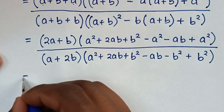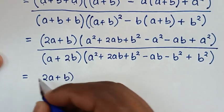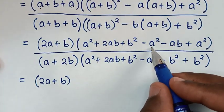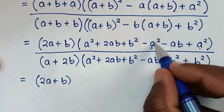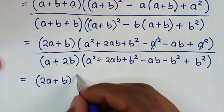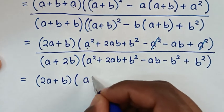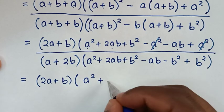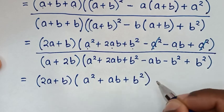Then, in the next step, it will be equal to 2A plus B bracket. Now, from here, we have this negative A square and this A square — A square minus A square will cancel. So, this and this will cancel. From here, it will be A square plus A square. This 2AB minus AB, it will be plus AB. Then, plus this B square bracket.